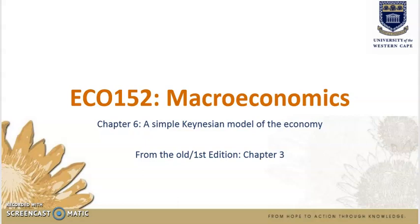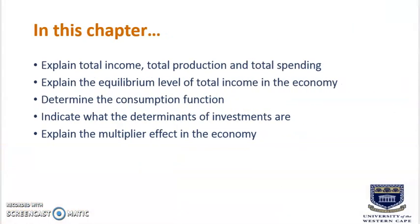Hello everybody, welcome back to ECO 152. In this video we are doing chapter 6 of the module, which is a simple Keynesian model of the economy. If you have the old or first edition of the textbook, you'll find this topic under chapter 3. In this chapter we are going to explain total income, total production, and total spending; the equilibrium level of total income; the consumption function; the determinants of investments; and the multiplier effect in the economy.